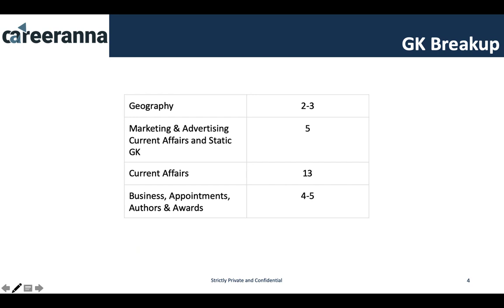Now let's have a quick overview of the GK section breakup. Based on last year's analysis, from geography you get two to three questions. From marketing and advertising related current affairs and static GK, you can expect around five questions. Typical current affairs would be around 12 to 13, and from business appointments, awards, and authors you can expect around four to five questions.